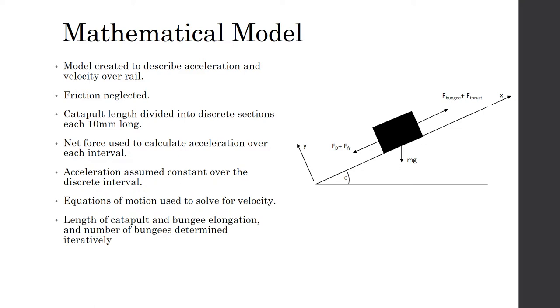A mathematical model was then developed to describe the acceleration and velocity of the UAV over the rail. Friction was assumed to be negligible. The catapult's length was then divided into discrete sections, each being 10 millimeters in length.